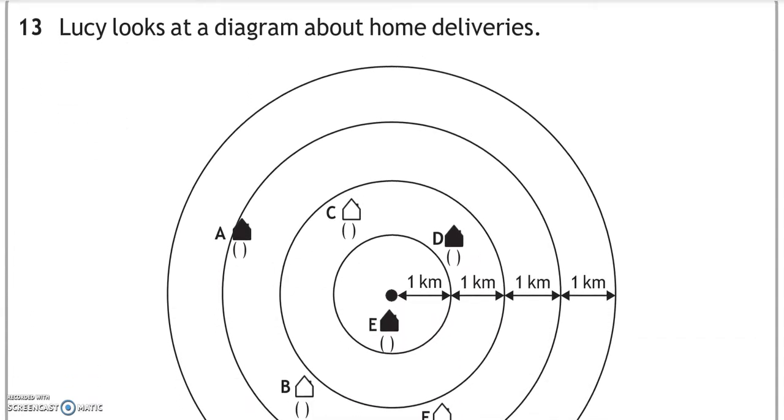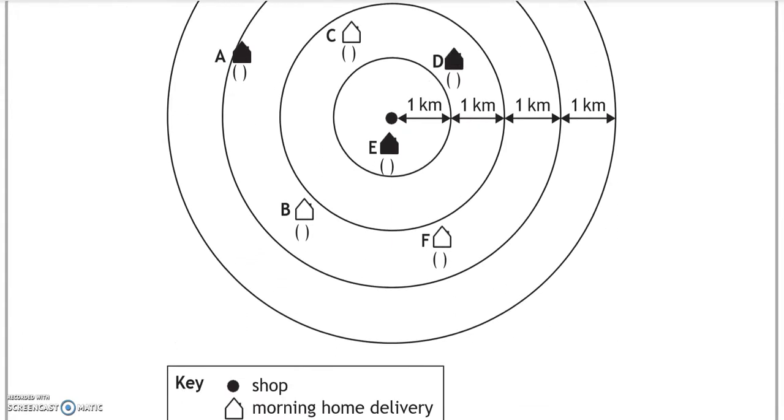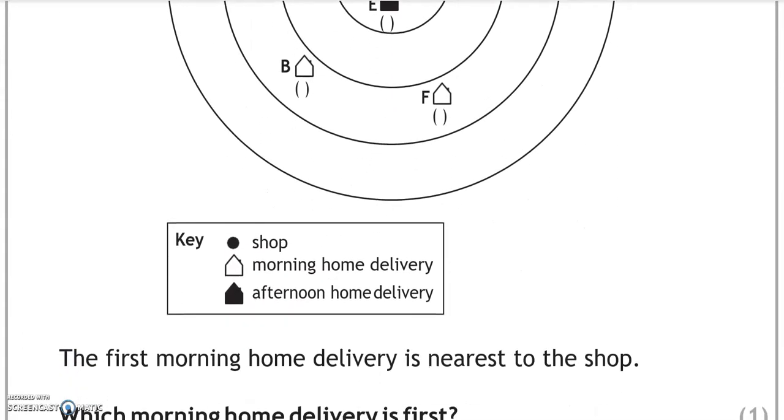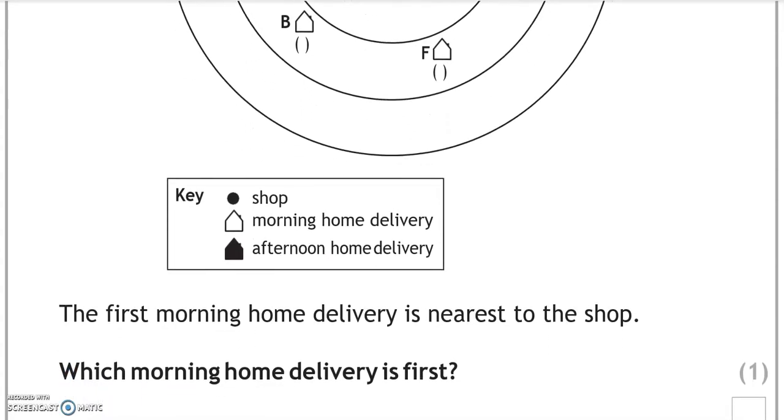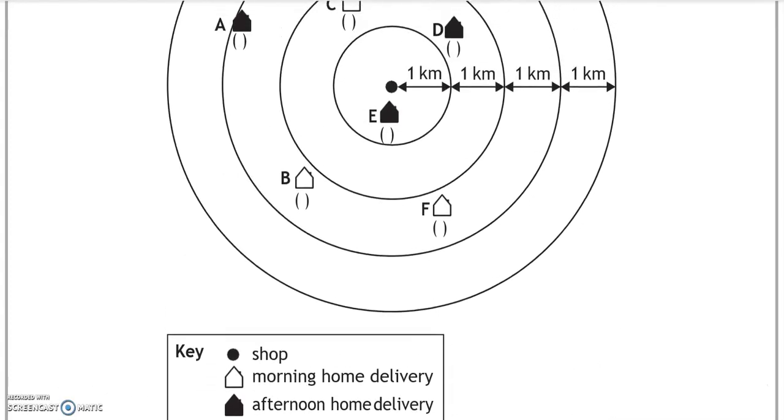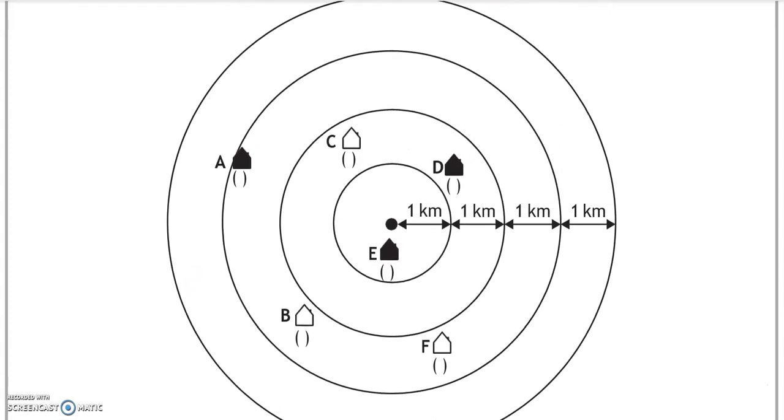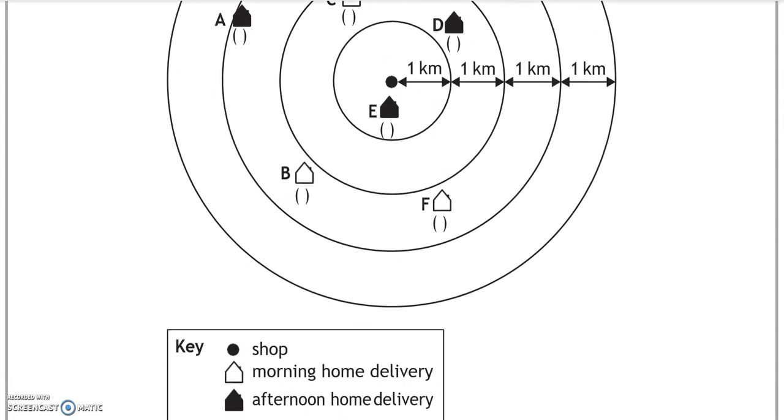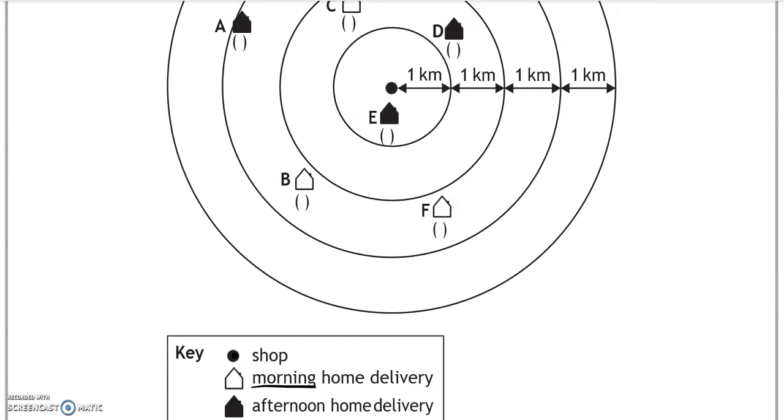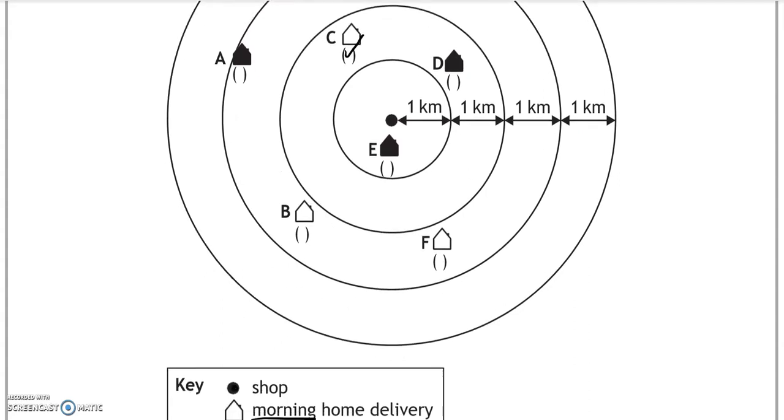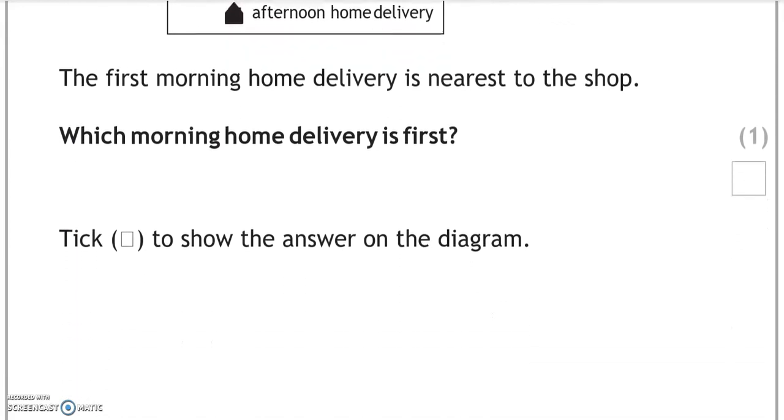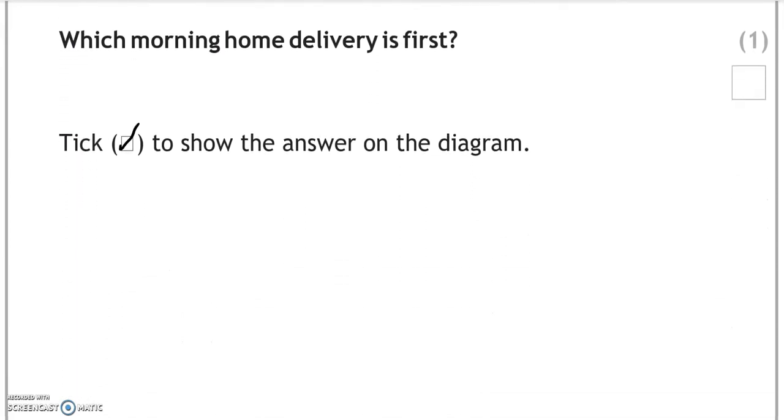Lucy looks at a diagram about home deliveries. Got the key. The first morning home delivery is nearest to the shop. Which morning home delivery is first? So nearest to the shop, which one is the shop? So the shop is where we've got the dot. Morning is shown in white, so the nearest house in white is this one, C.